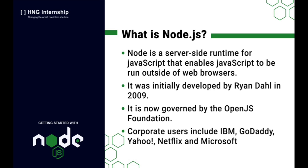JavaScript was developed only to run within that window, but with the introduction of Node, JavaScript can now run both on the client side in those windows or on the server side. It was developed in 2009 by Ryan Dahl, who did this by encapsulating Google's V8 engine in a C++ runtime environment called Node. Since then, Node has seen tremendous growth, gotten a lot of support from the community, and is now governed by the OpenJS Foundation. It has found application in corporate users like IBM, Facebook, Google, Netflix, and Yahoo.